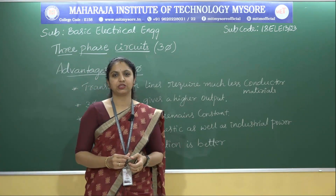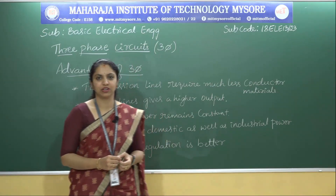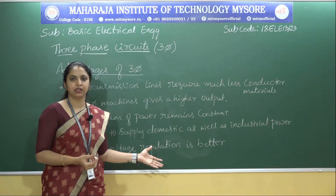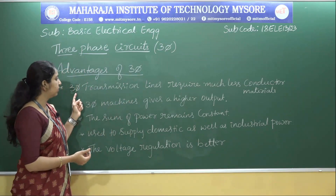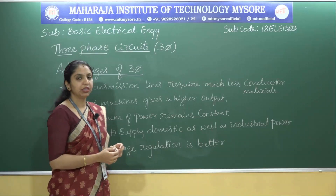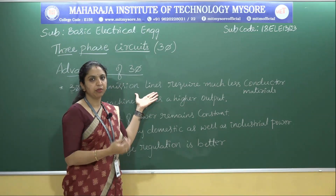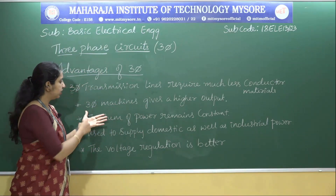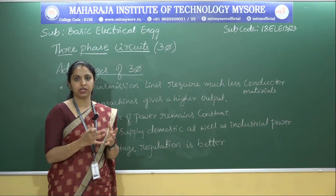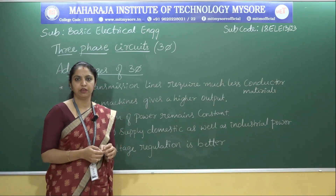Now we shall see some of the advantages of three phase system over single phase system. First, three phase transmission lines require much less conductor material. Second, three phase machines give a higher output — at a given frame size, three phase machines give a higher output, meaning better efficiency.